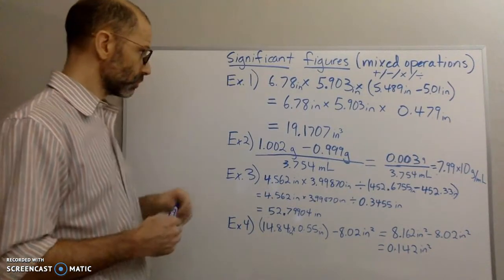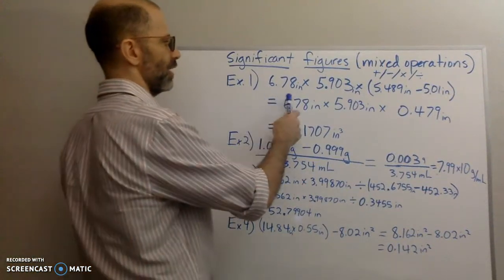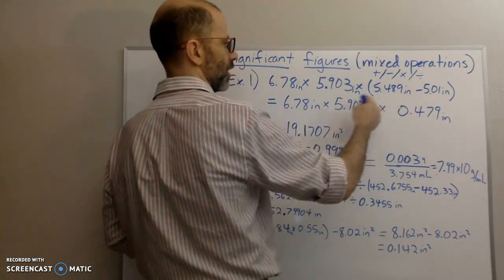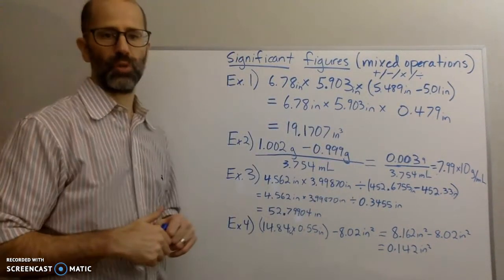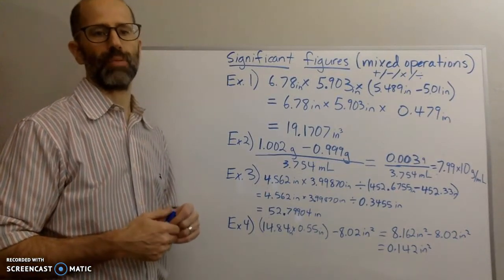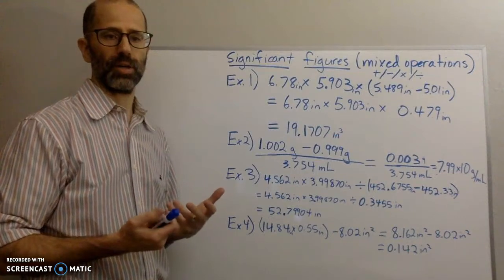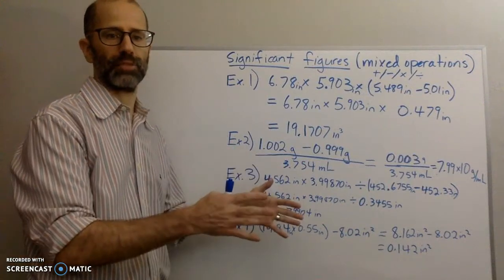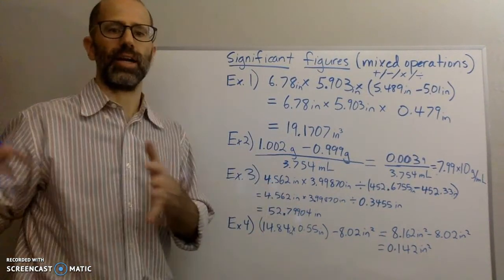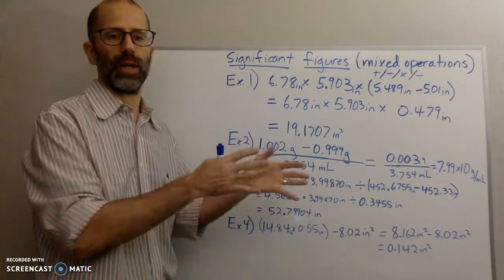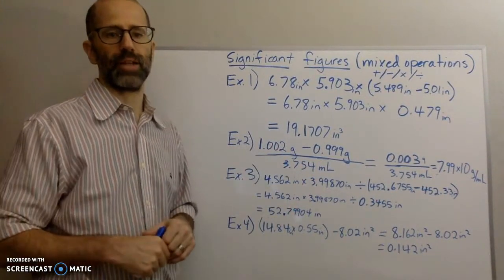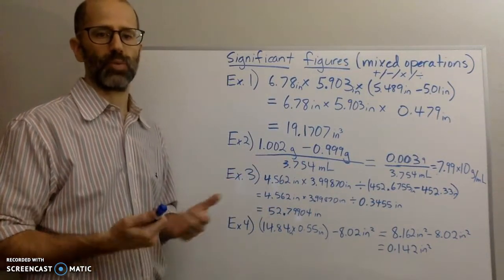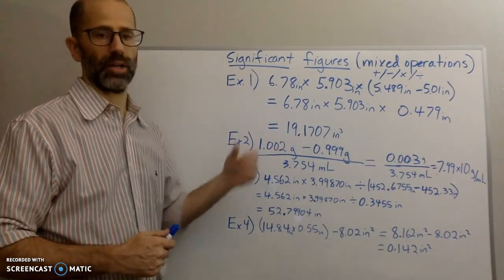So example number one. Here you can see that you have to multiply these numbers, but then you have this in parentheses that you are going to subtract and then multiply. When you're doing these sorts of calculations, you're going to have to follow the order of operations. A lot of times you're doing calculations step by step — you do one calculation first, then take that answer and follow to another calculation.